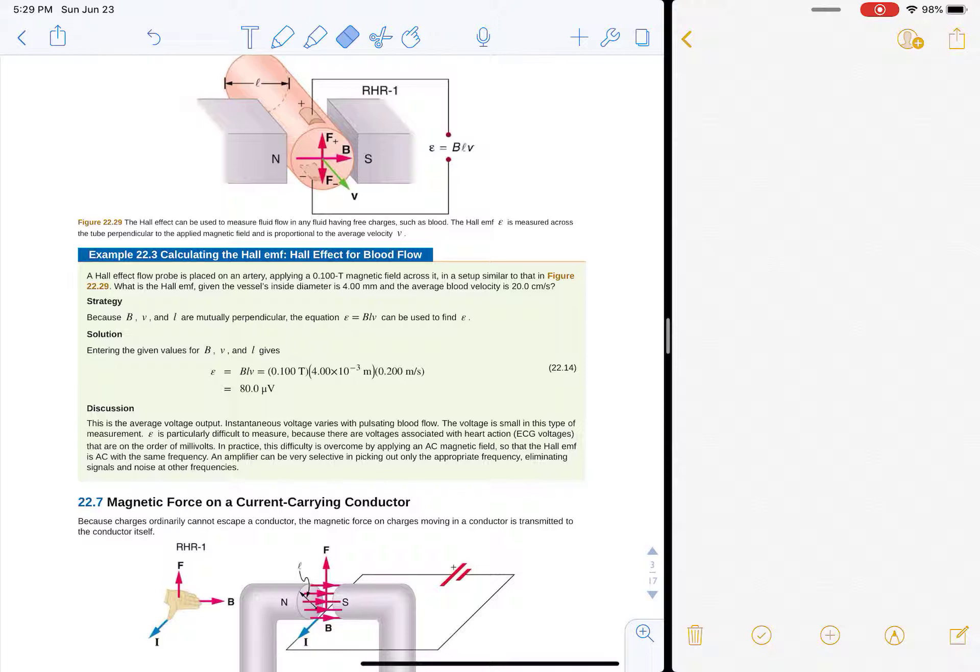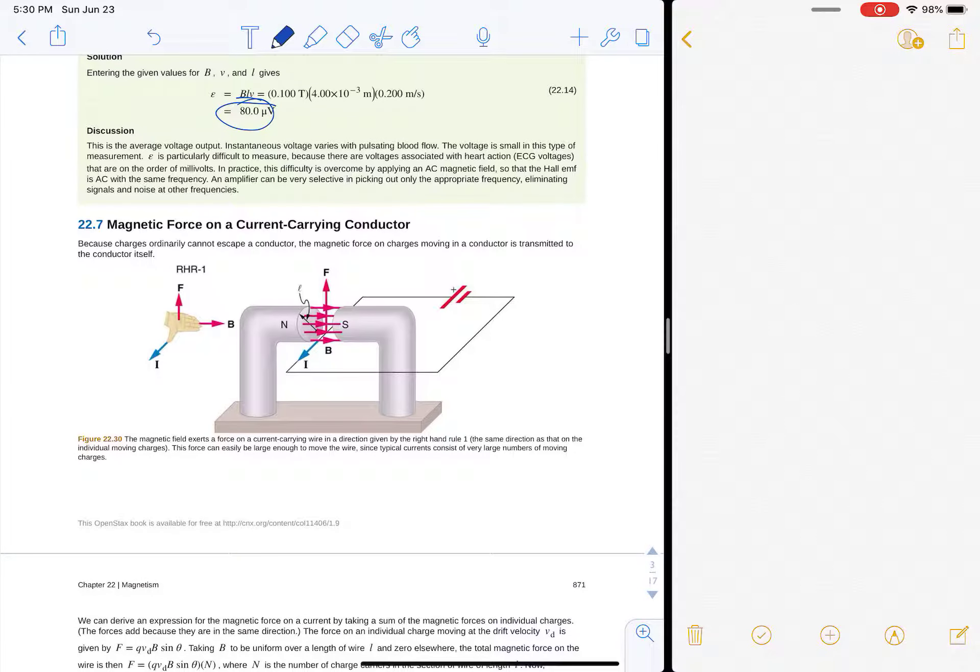So here's an example calculating it for blood flow. You put a 0.1 Tesla magnetic field across an artery similar to this picture up here, and then what is the Hall EMF if the diameter is 4 millimeters and the average blood flow is 20 centimeters per second. So you just plug all that stuff in here, and you get a very, very tiny EMF.